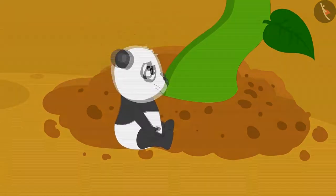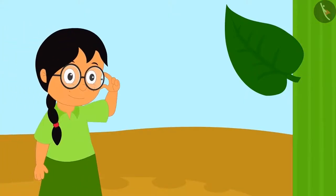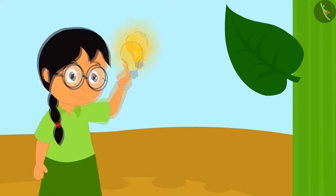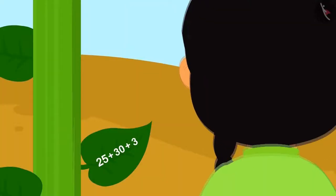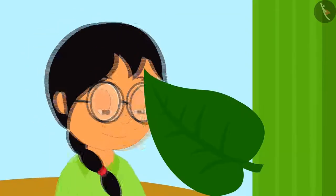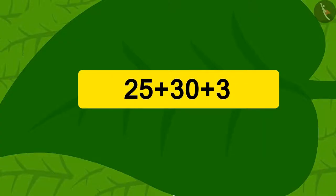Then Meenu got an idea. She saw a puzzle written on the leaf of the vine. This was the puzzle written on the leaf. Children, can you find the answer to this puzzle mentally?